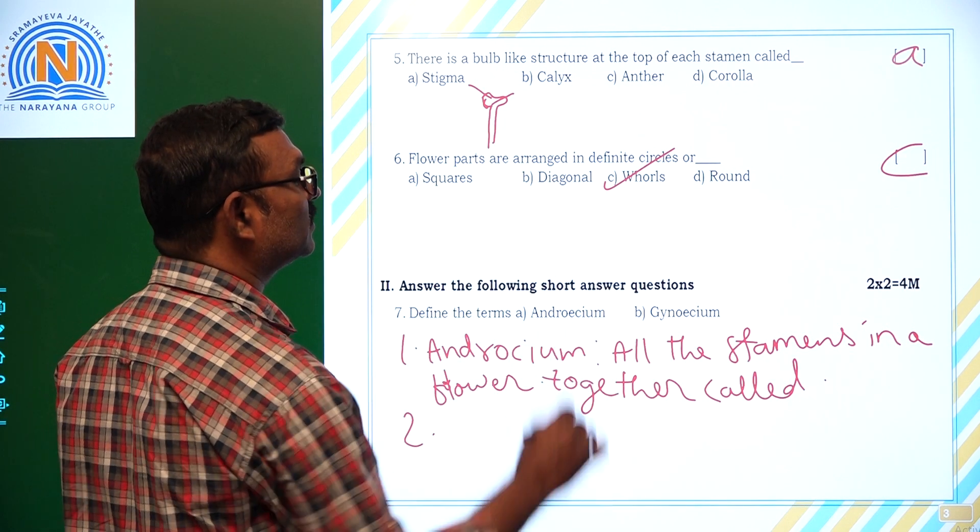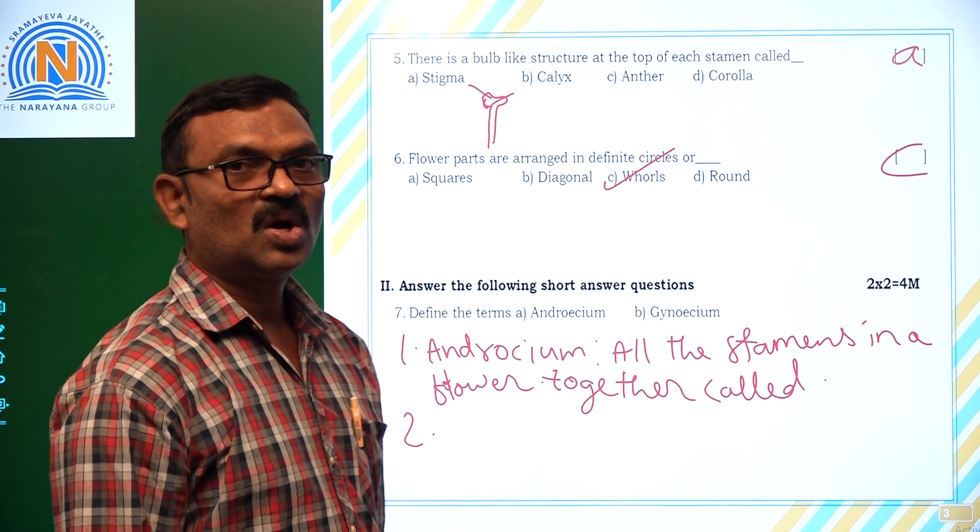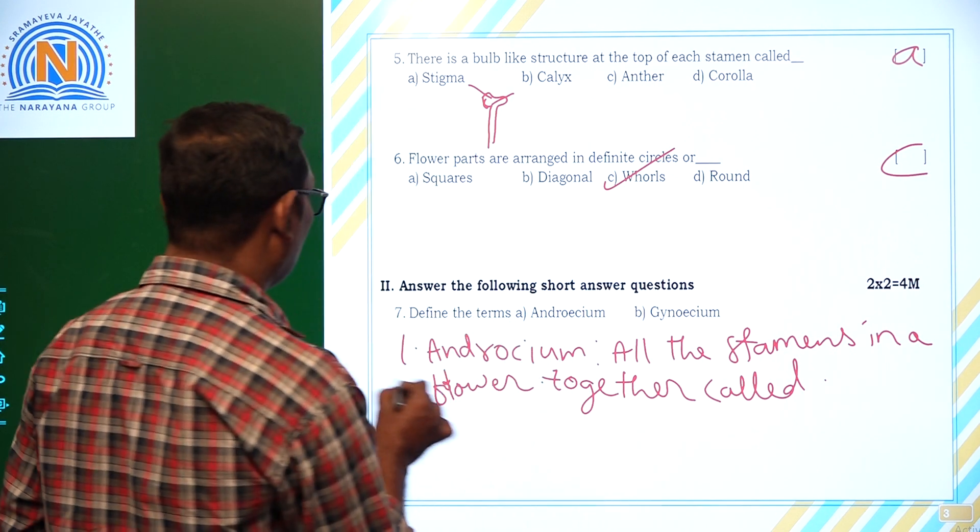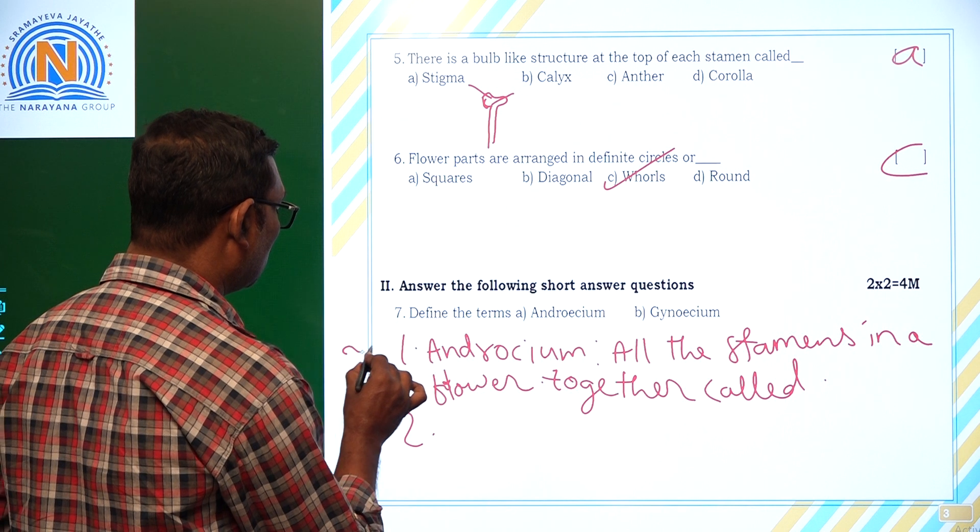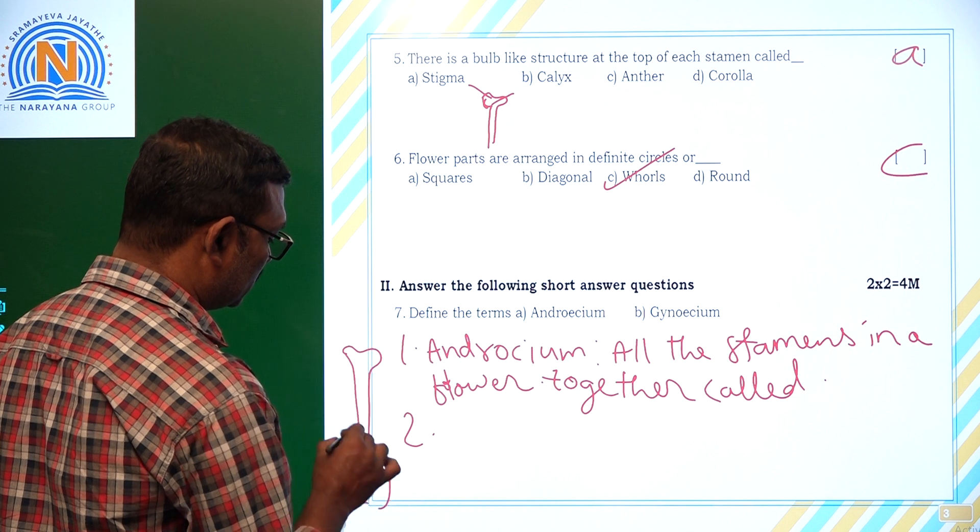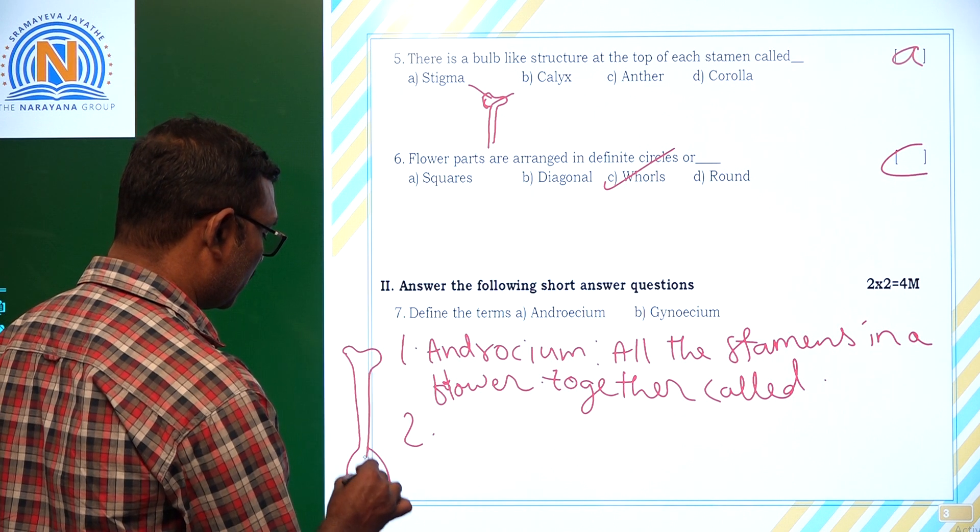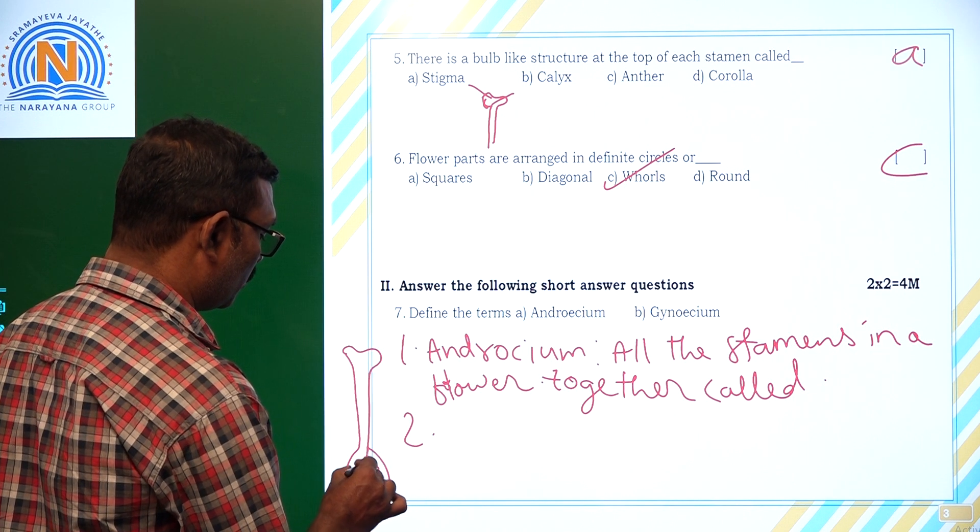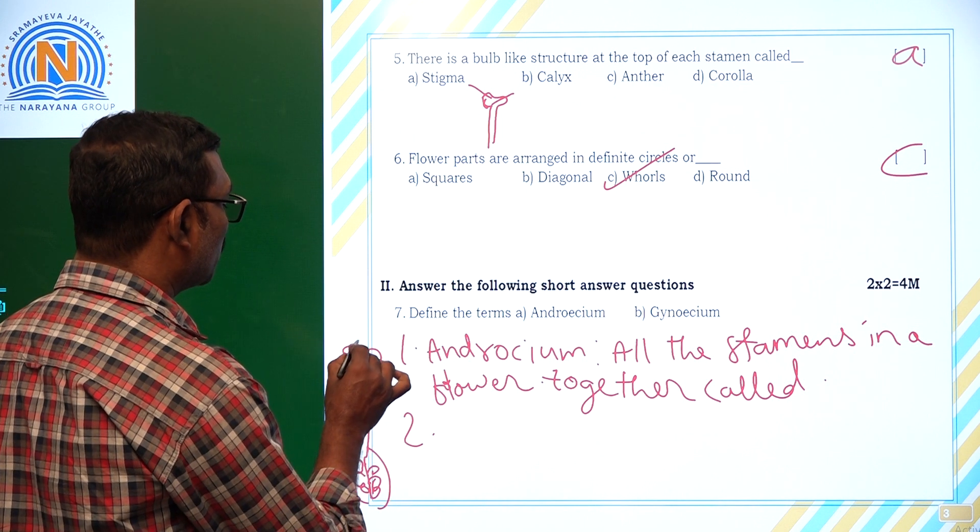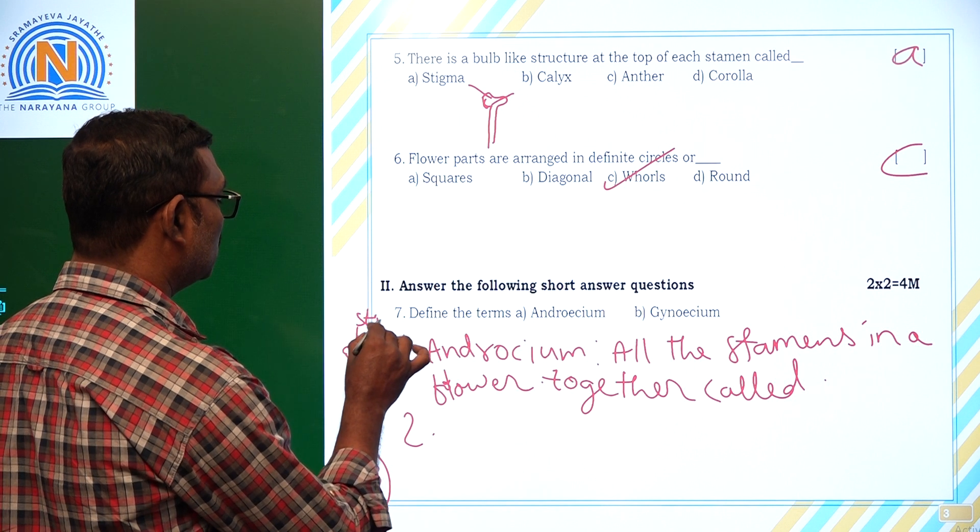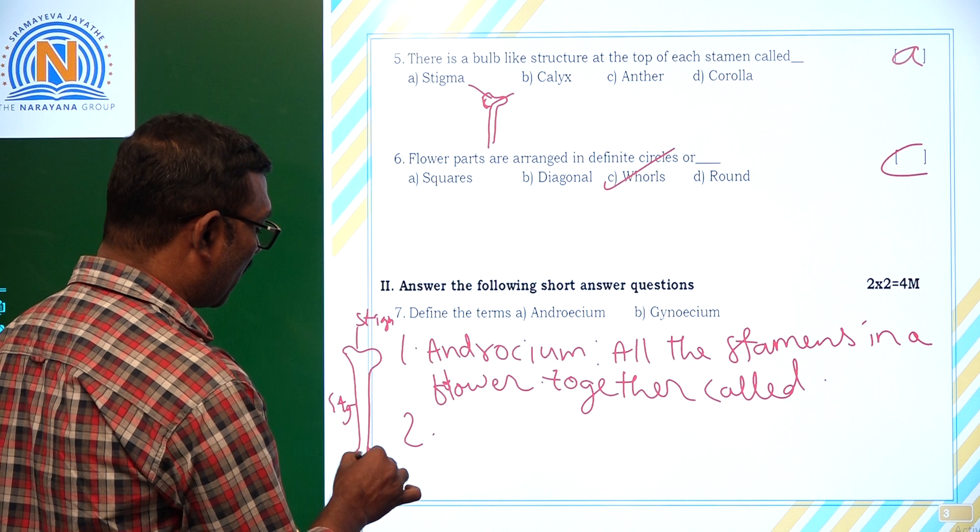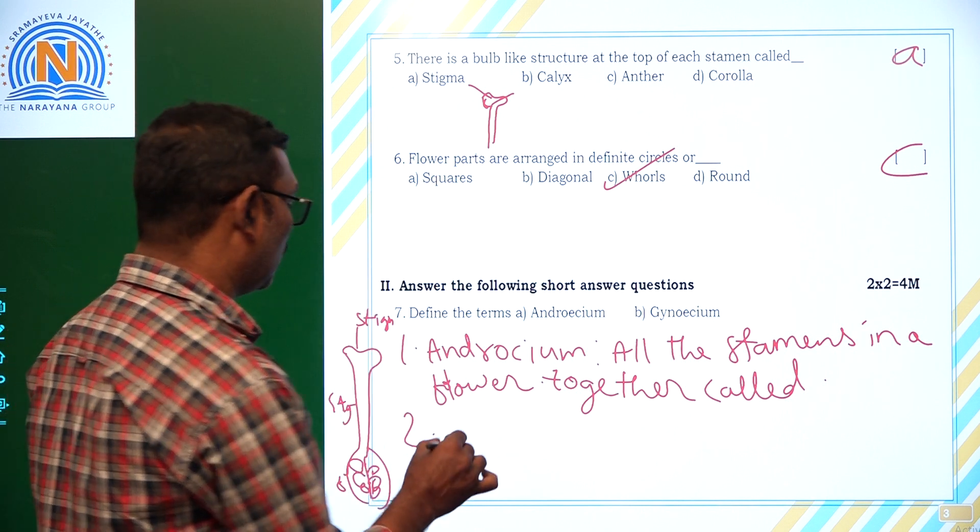And what is gynoecium? Gynoecium means all the parts present in the pistil. For example, I am showing here this is the part of a pistil. This flowering consists of ovary, and this one is style, and this one is stigma. These three parts, this is flowering.